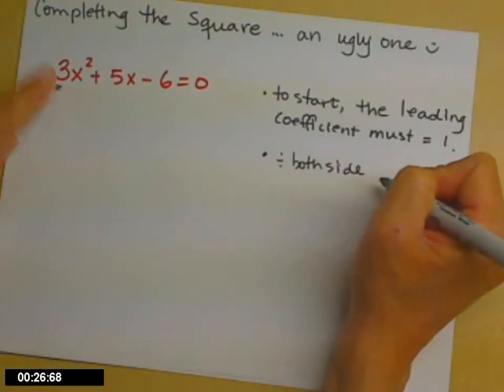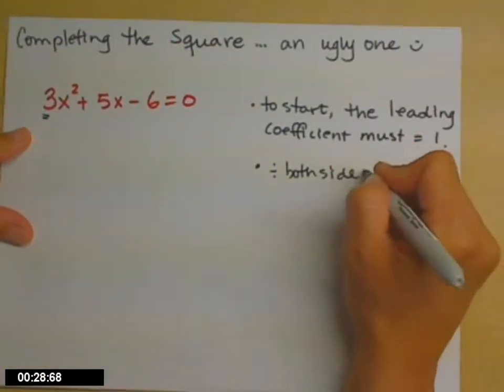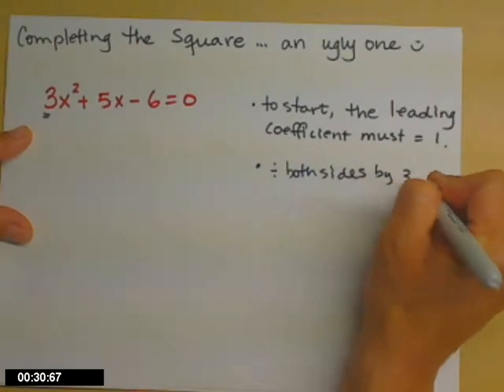by whatever the leading coefficient currently is. So for us, that's going to be 3. So divide both sides by 3.